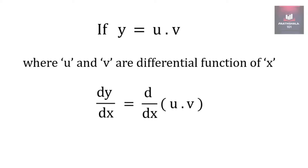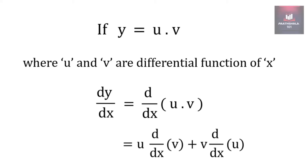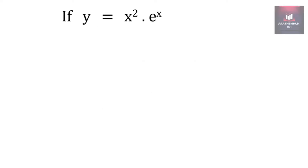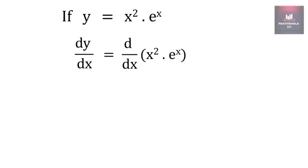This expansion proceeds as u into the derivative of v, plus v into the derivative of u. Let us understand this with the help of an example. Suppose y is x square into e raised to x. If we take the derivative of y with respect to x, the derivative will be applied to the right hand side, that is x square into e raised to x. We take x square as u and e raised to x as v.